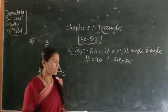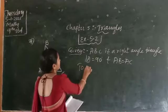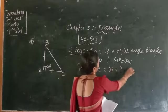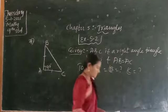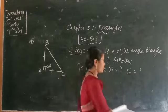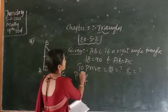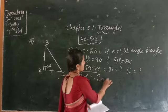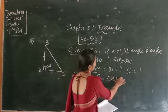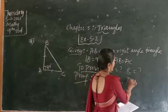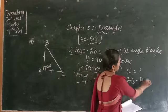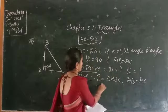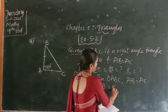Now write the data given and the proof. What are they given? ABC is a right angle triangle. Angle A is equal to 90 degrees, and AB is equal to AC. What we have to prove: angle B and angle C values. Now write the proof. In triangle ABC, AB is equal to AC — that is a given point. Therefore, angle B is equal to angle C.